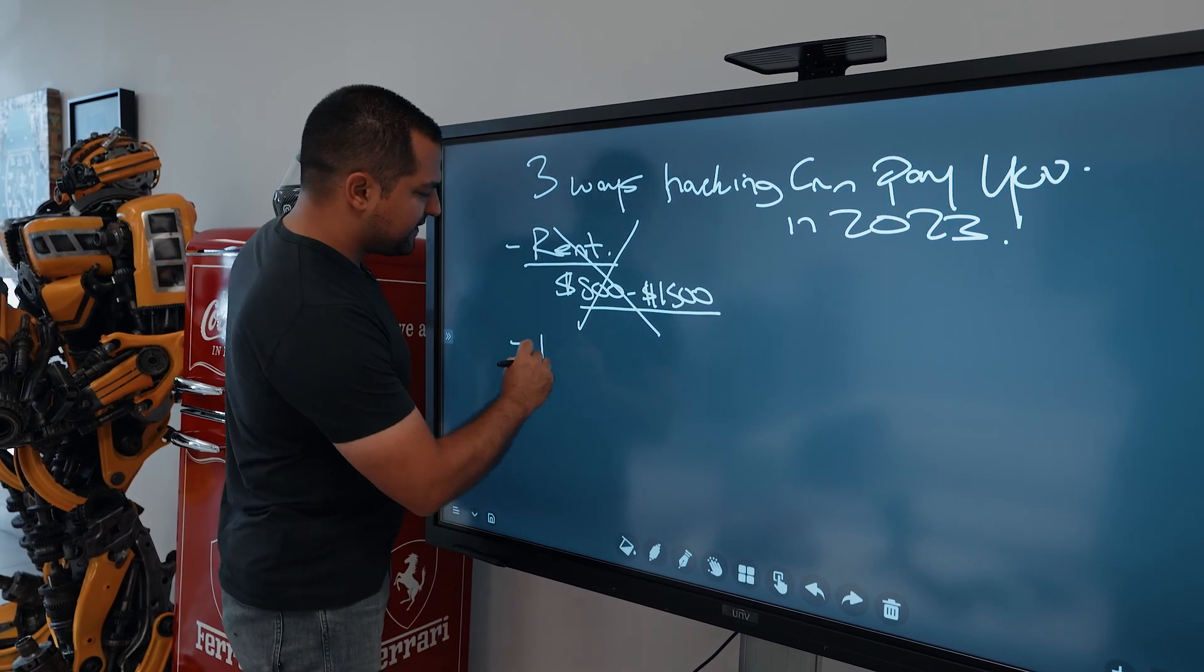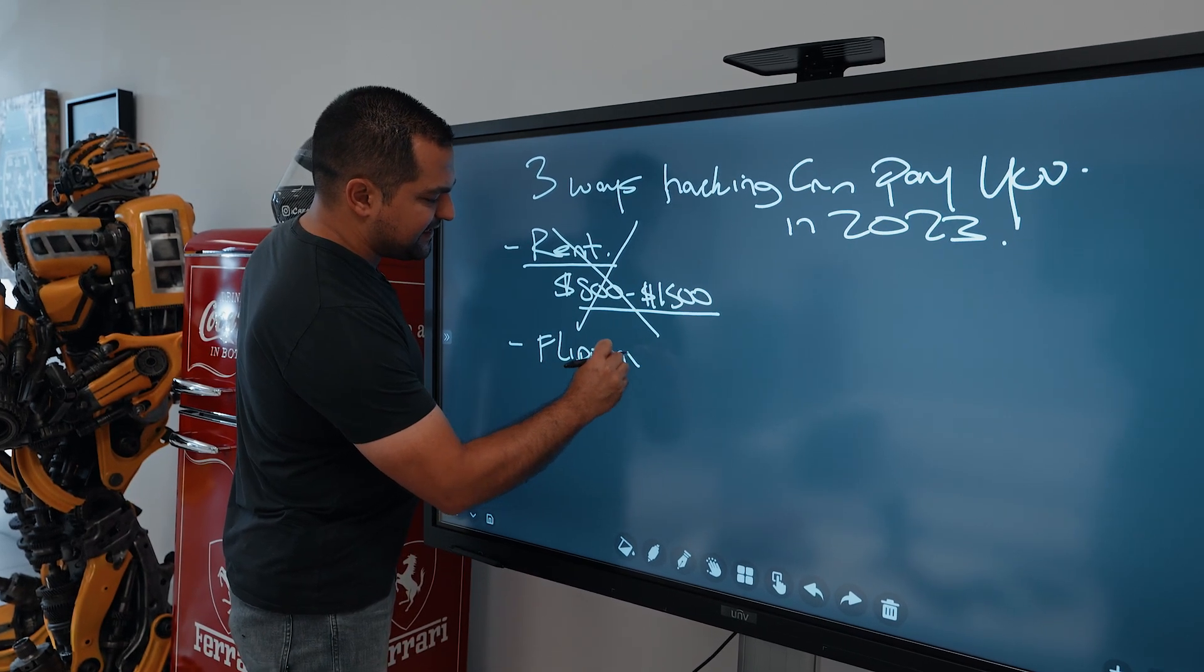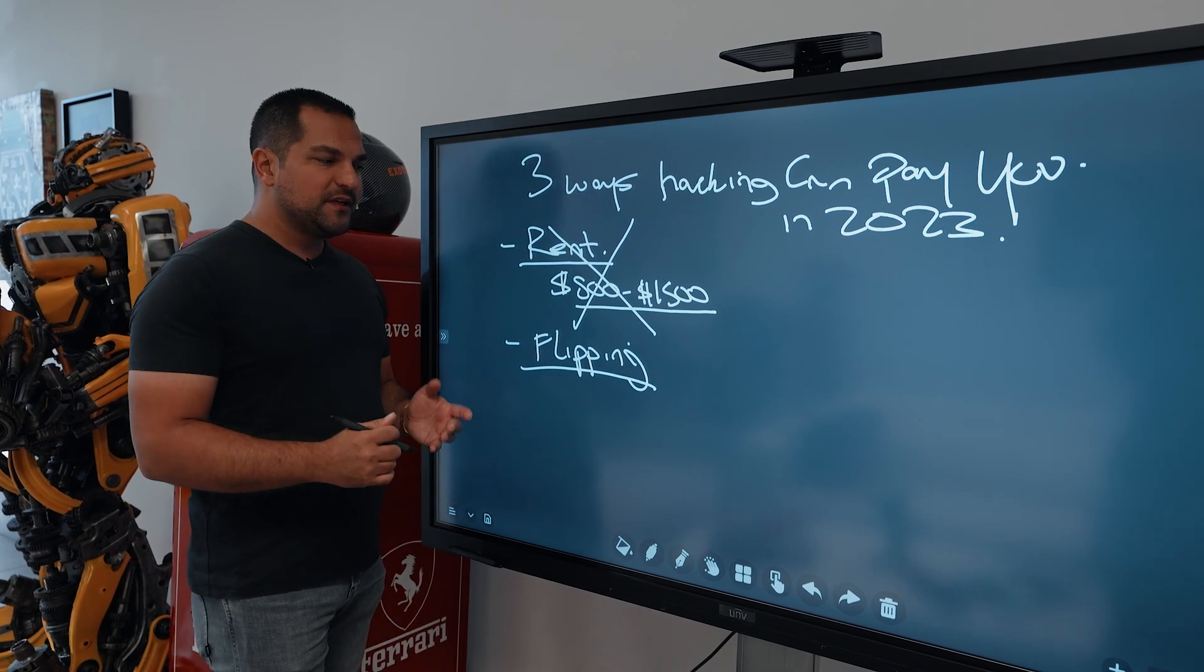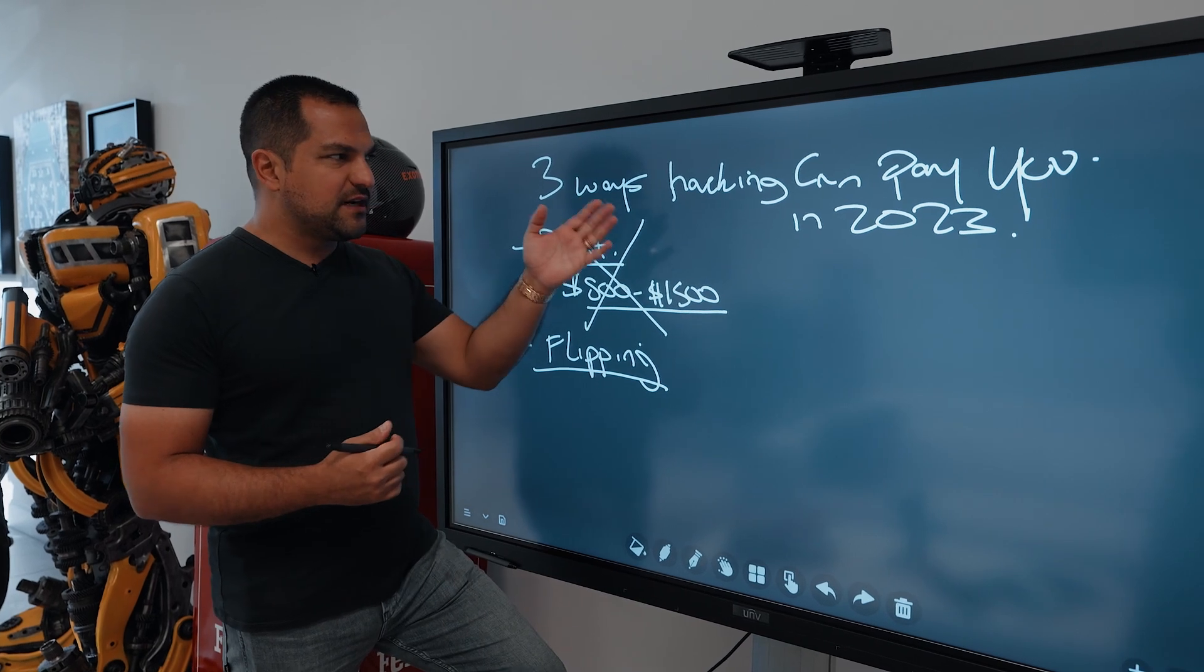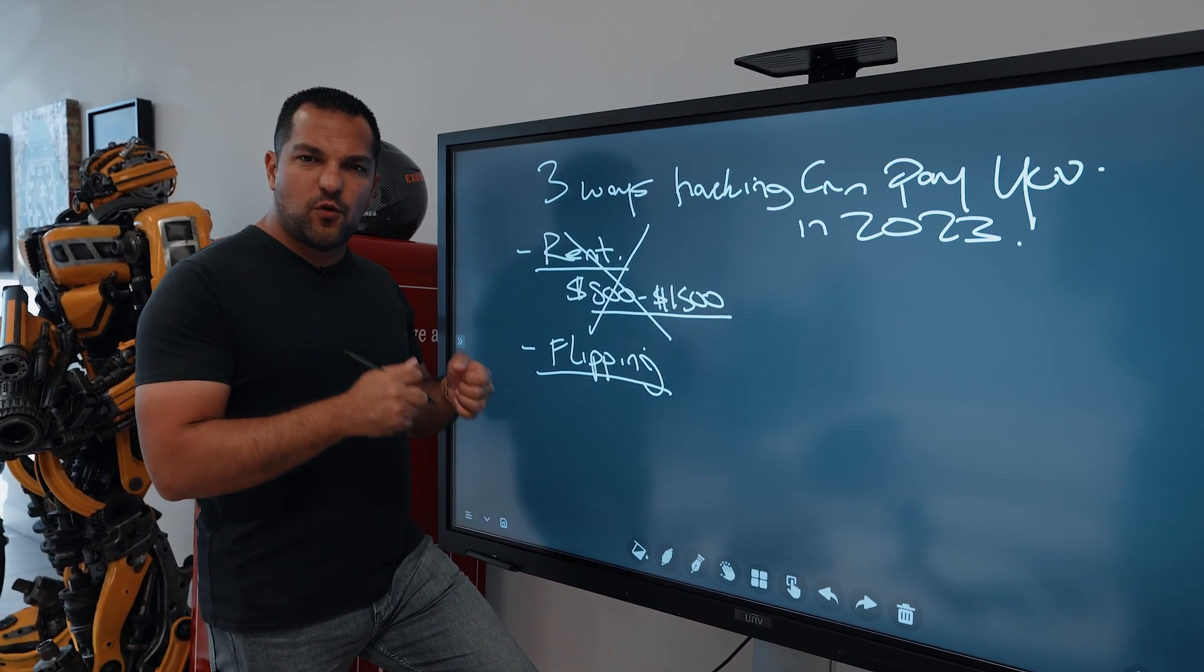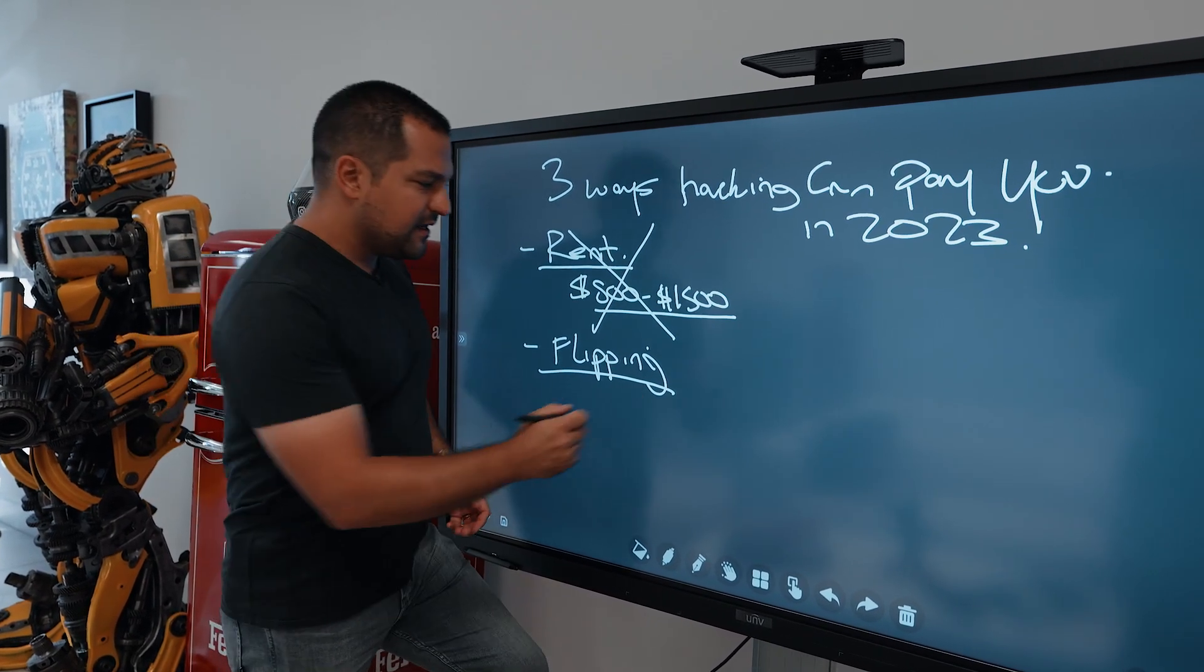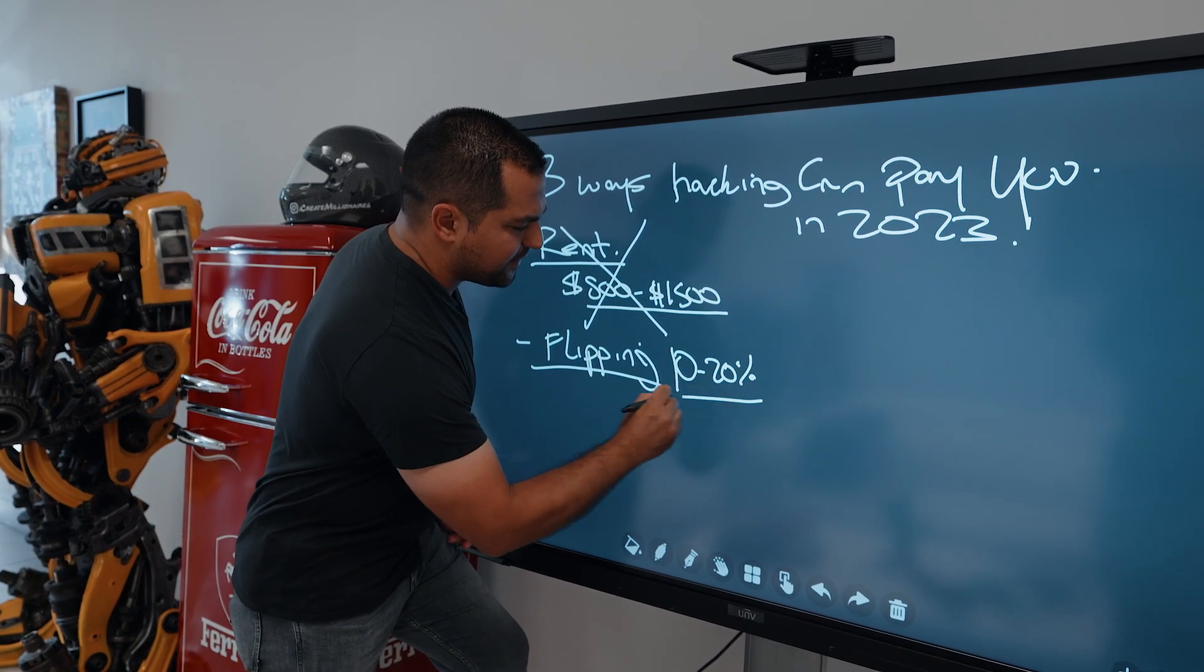Now, it is true that the second way that you could be making money is flipping in the sense that if you didn't care for exotic car ownership and what you cared about was just buying low and selling high, it is true that using our methodology at the time of the buy, at the very moment when you inquire and acquire the car, you have an opportunity to immediately turn around and make about 10% to 20% on the car if you bought it correctly.